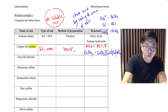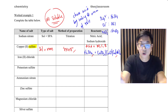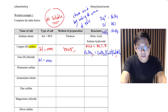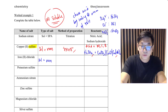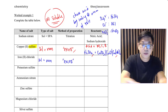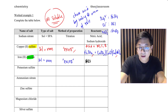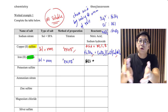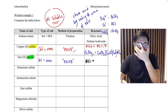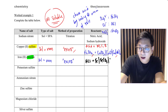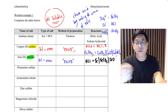For iron(II) chloride — most chlorides are soluble, and iron is non-SPA, so we use the excess method. Because it is a chloride, we choose hydrochloric acid (HCl). We can choose iron metal, iron carbonate, or iron oxide (FeO for iron II). Iron metal can react with acids, so it works.